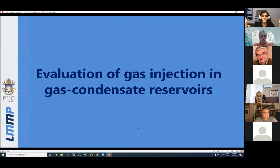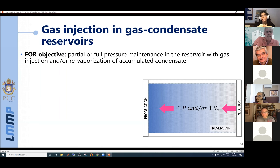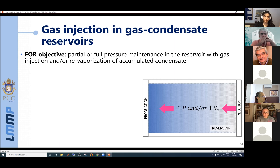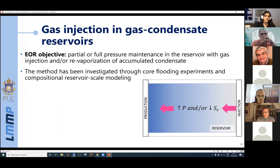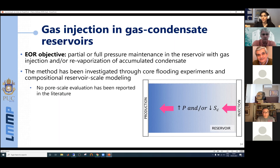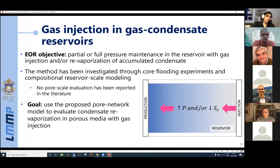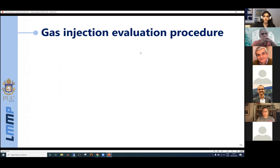The last part of the results section is the evaluation of gas injection in gas condensate reservoirs. The objective of this EOR method is to promote partial or full pressure maintenance with gas injection and to re-vaporize accumulated condensate. This method has been investigated through core flooding experiments and compositional reservoir-scale modeling, but no pore-scale evaluation has been reported in the literature. We therefore used the proposed pore network model to evaluate condensate revaporization in porous media with gas injection.